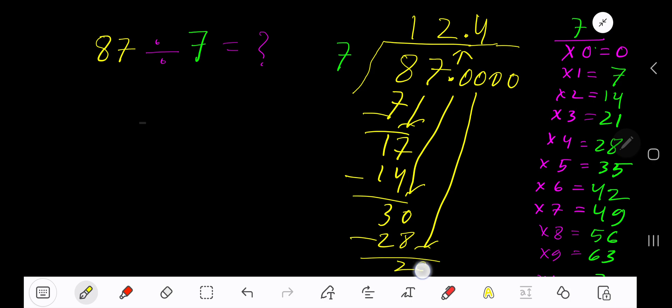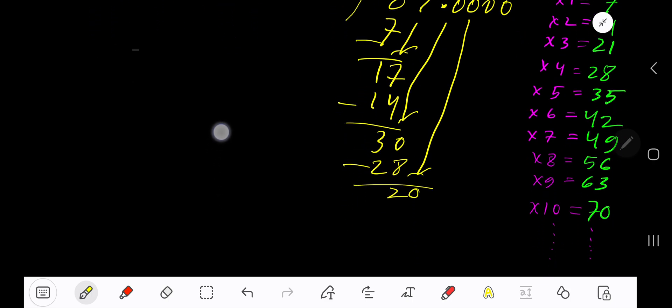7 goes into 20 how many times? 2 times. 2 times 7 is 14.